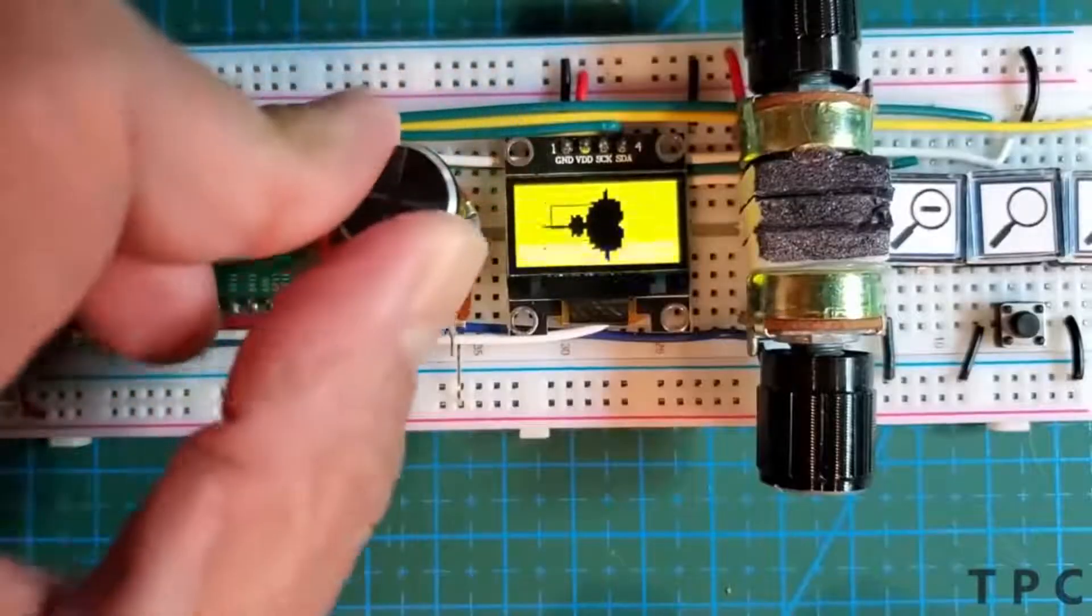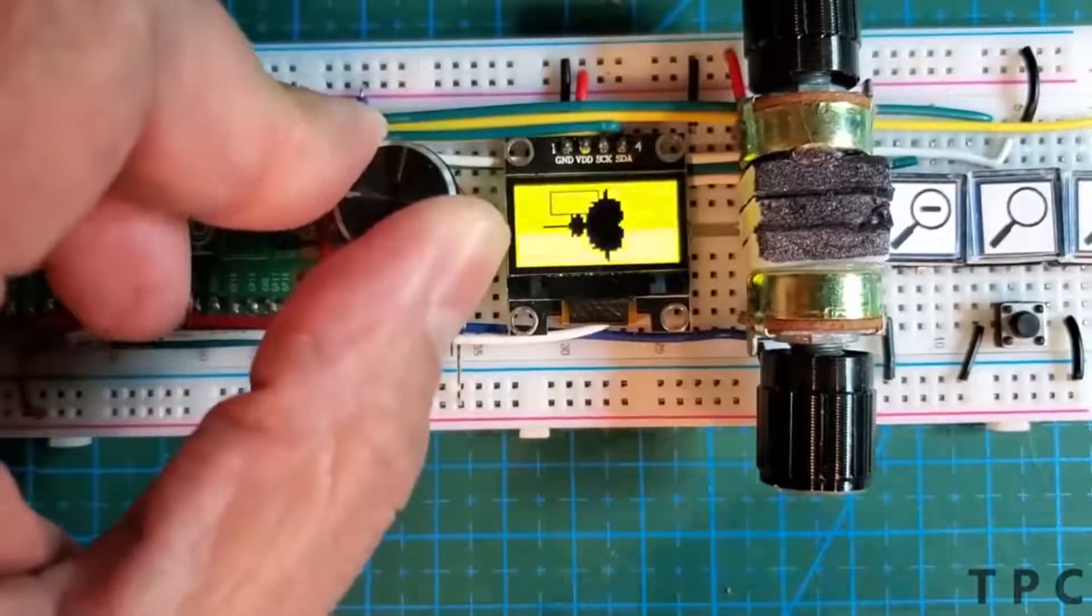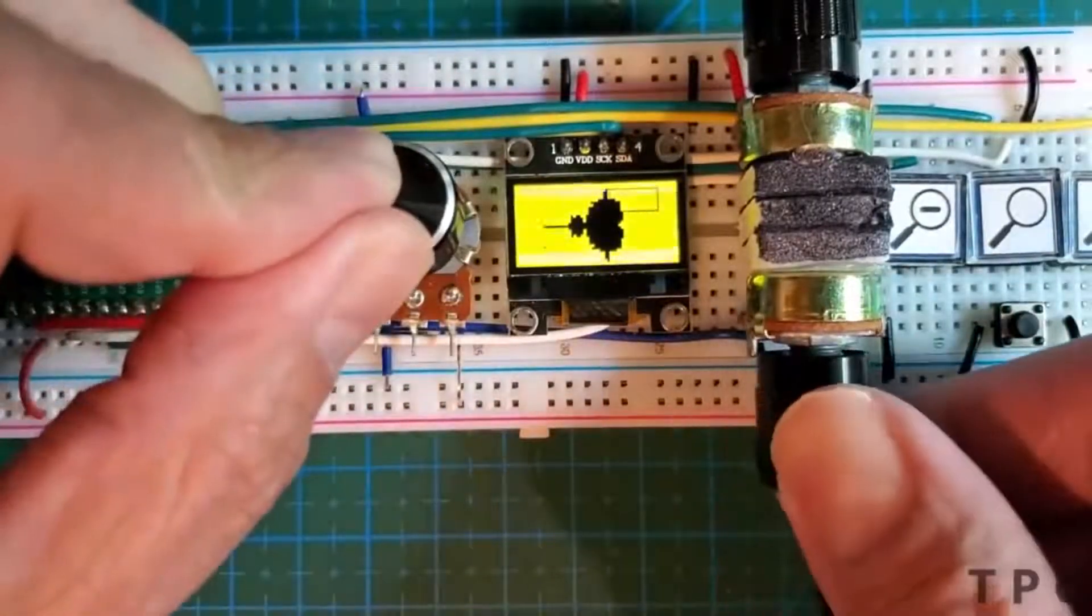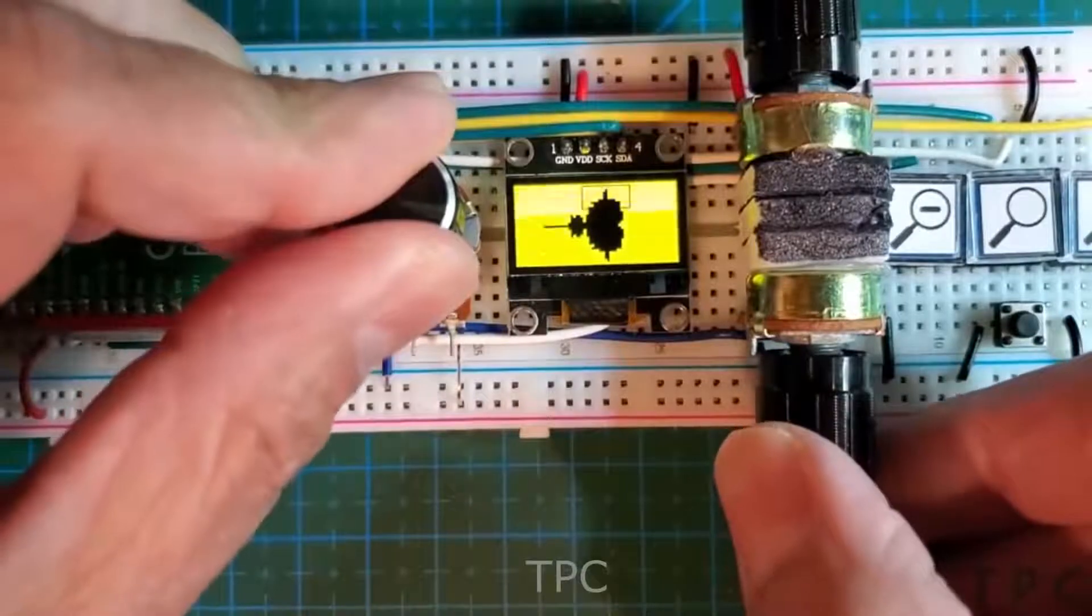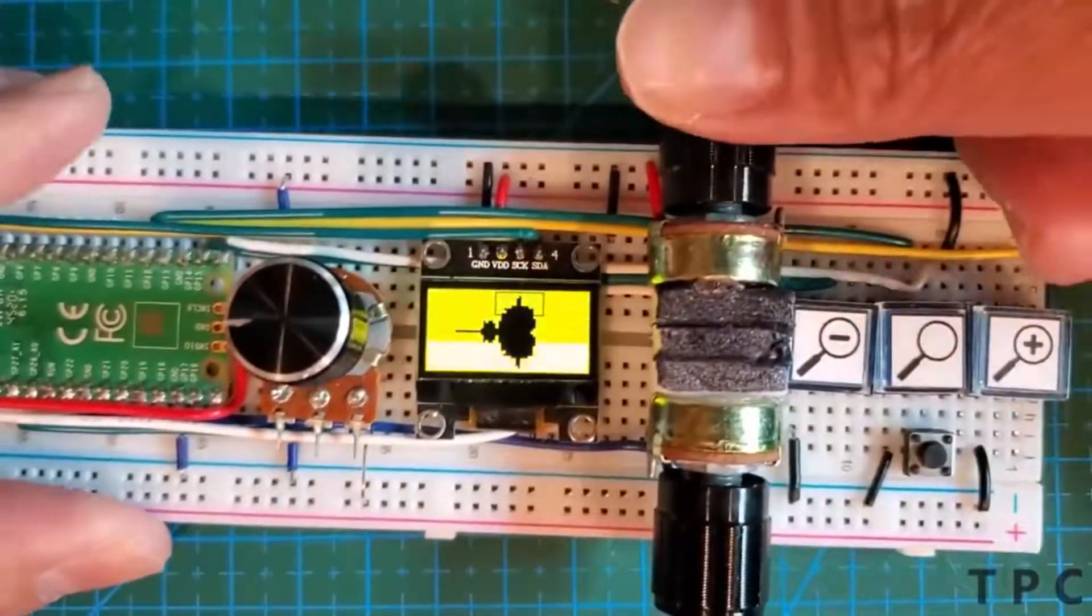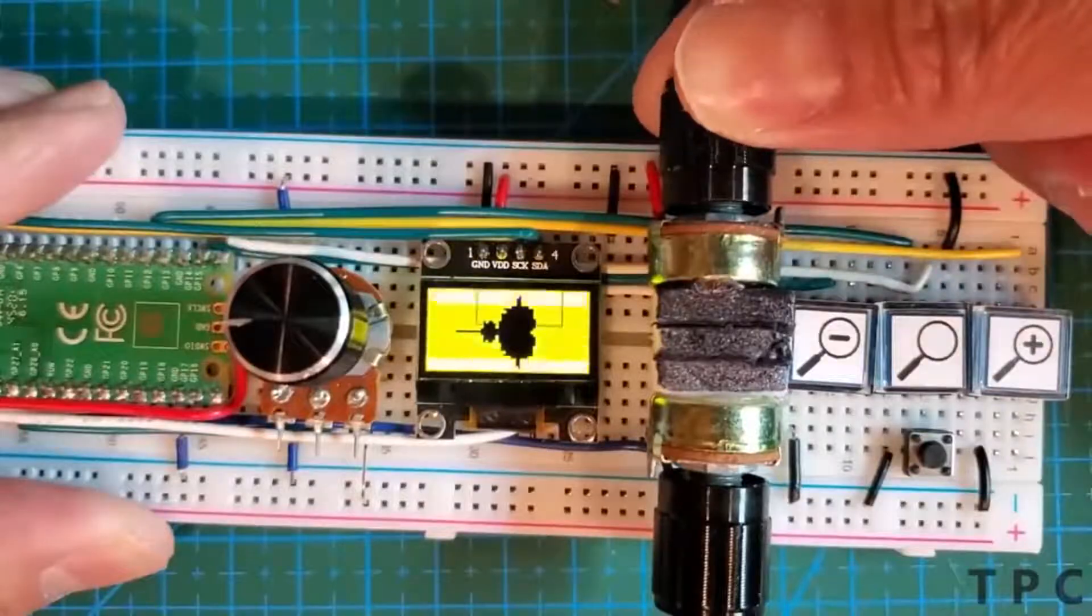The potentiometer on the left controls the y-axis movement while the one at the bottom controls the x-axis movement of the slider. Once you find the desired area to zoom in, you can use the upper potentiometer to select how much you want to zoom the image.